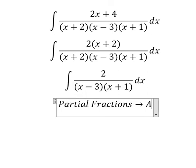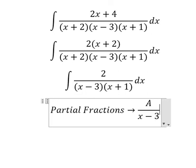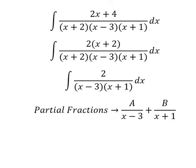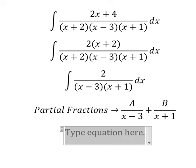So I will put A over x minus number 3 and B over x plus 1. Now we do common denominator.